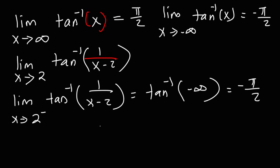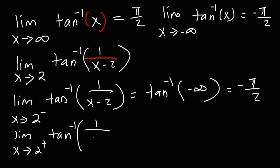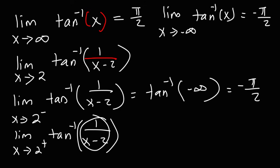Now we check the right-sided limit: as x approaches 2 from the right, if we plug in 2.001, then 1 over 2.001 minus 2 gives positive 1,000, indicating that 1 over x minus 2 approaches positive infinity.